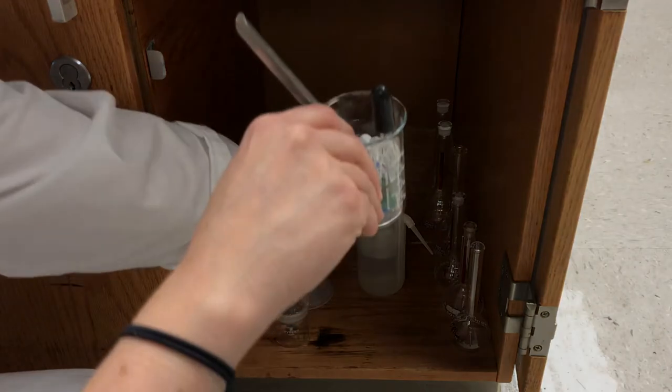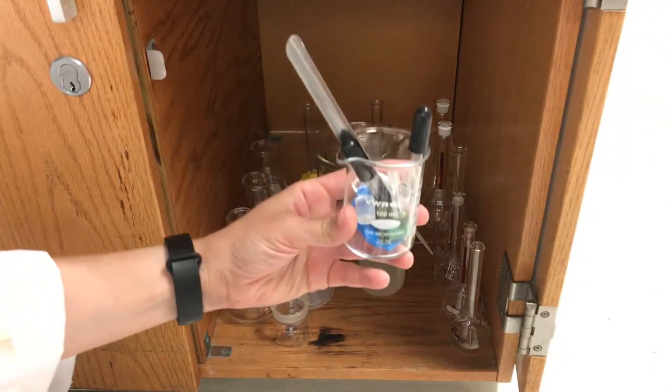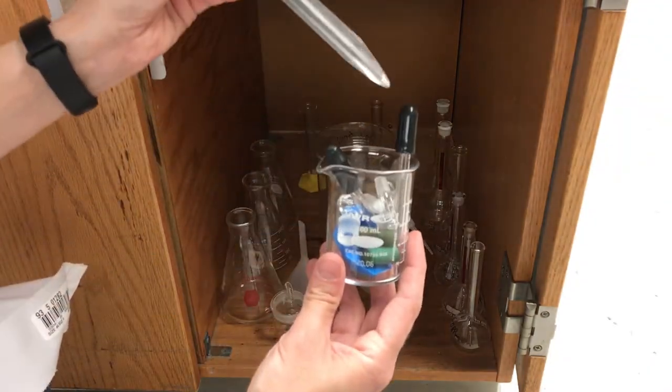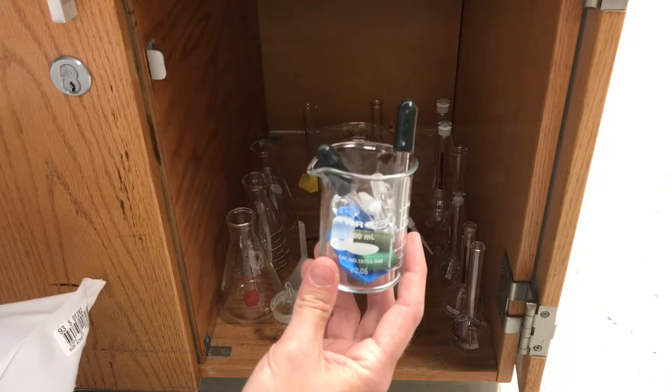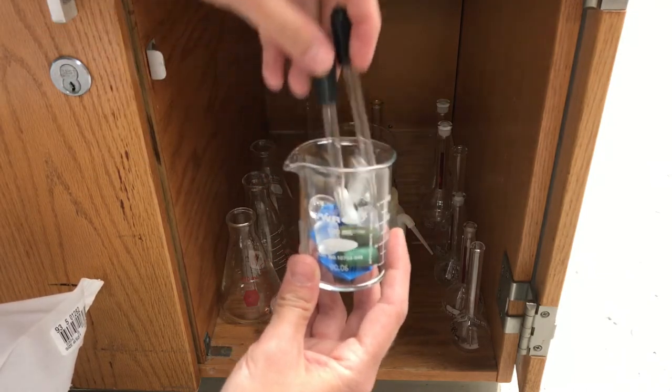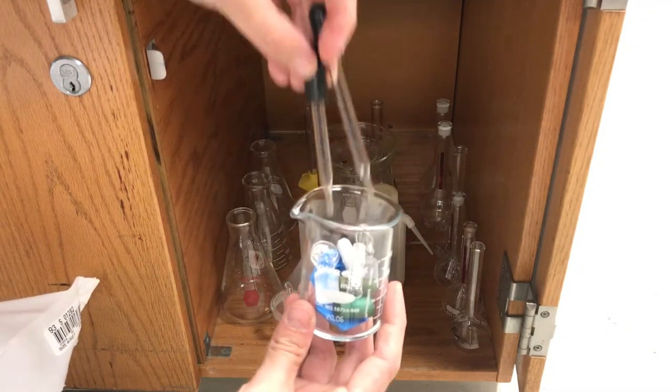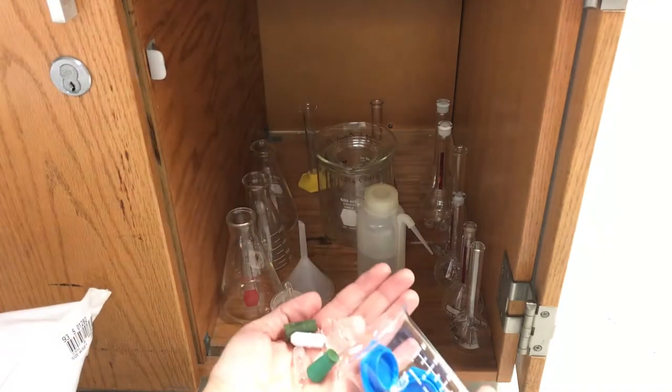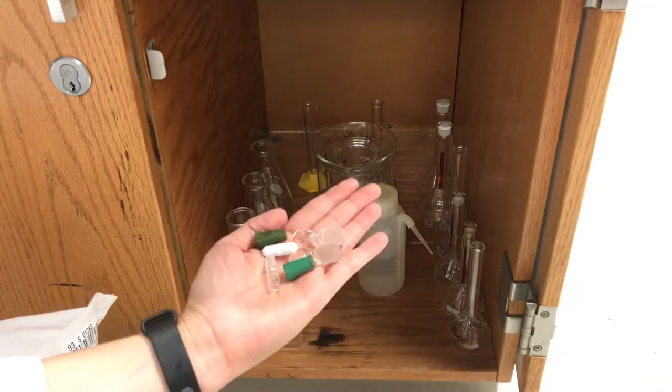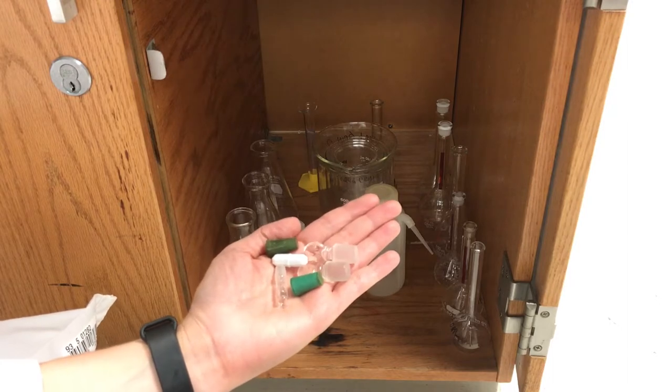And then often you'll find in the 100 milliliter beaker a few items such as a scoopula, maybe a spatula, two droppers, and a number of different stoppers that will go with some volumetric flasks.